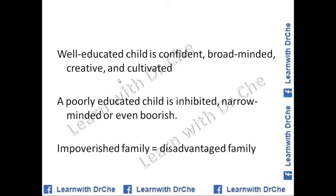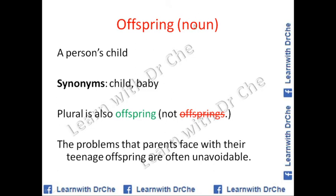Some good vocabulary: a well-educated child is confident, broad-minded, creative, and cultivated — use these in speaking and writing. A poorly-educated child is inhibited, narrow-minded, or even boorish. An 'impoverished family' is equal to a 'disadvantaged family' — use as synonyms. 'Offspring' is a noun meaning a person's child; the plural form is also 'offspring,' not 'offsprings.'